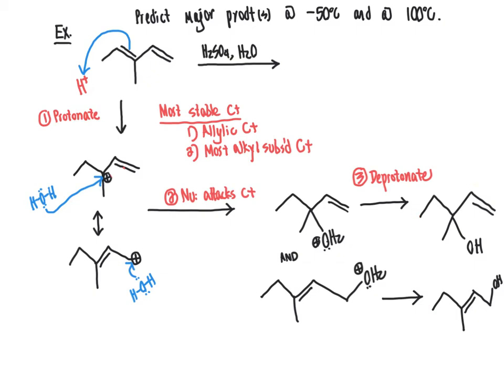Another way to check to make sure that you're on the right track is make sure that your group that you've added is allylic to a double bond. Hydroxy group is allylic here to a double bond. Hydroxy group is also allylic here in our other constitutional isomer to the double bond. So we're good to go there.